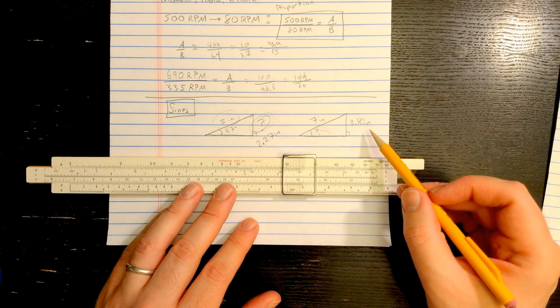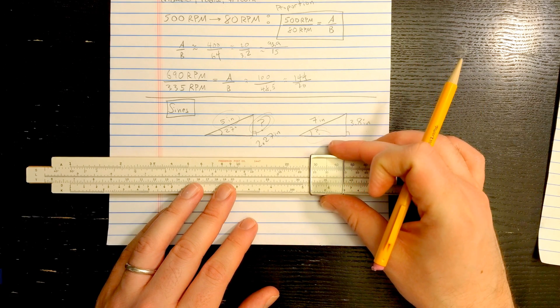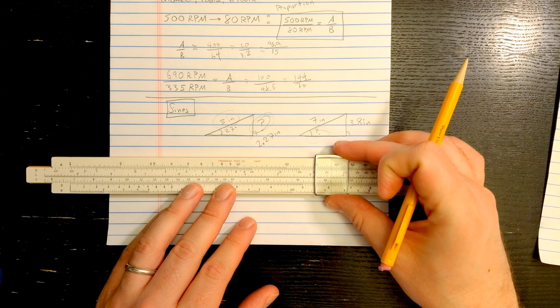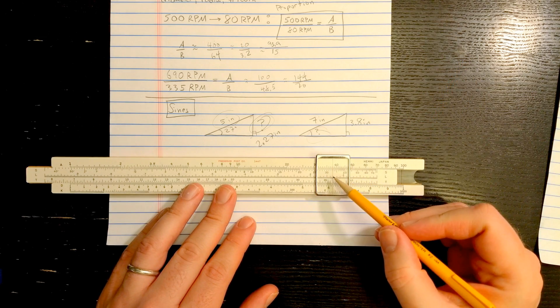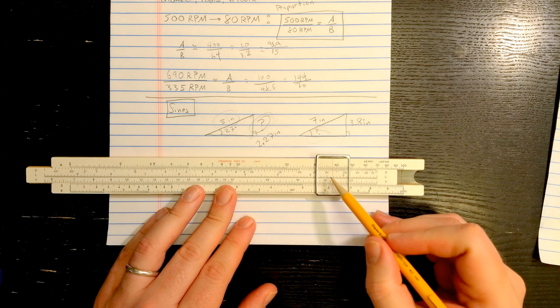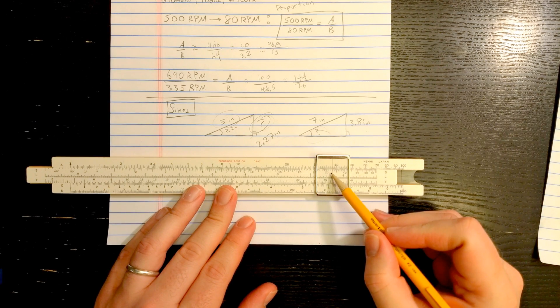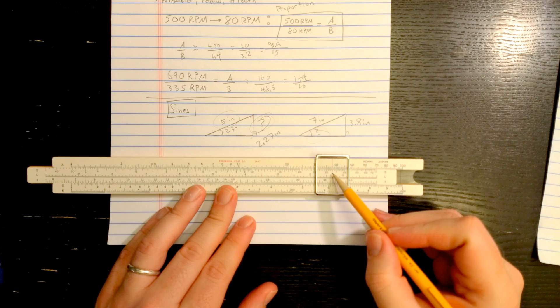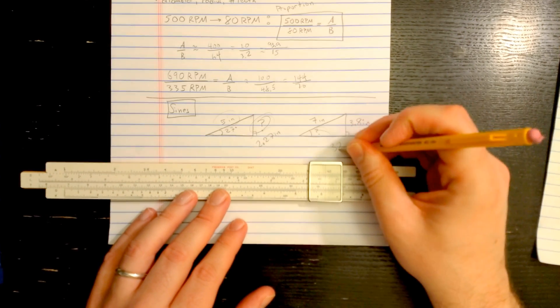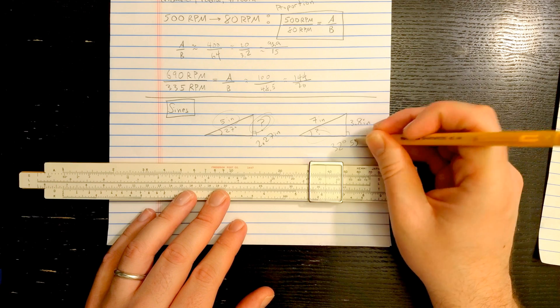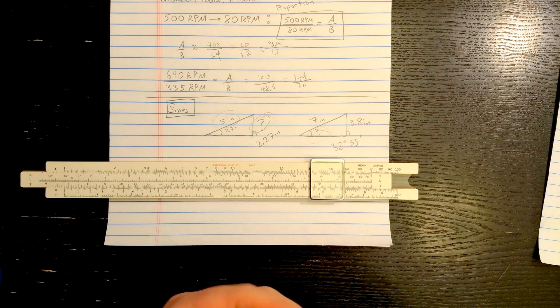Okay, so now the question is, if I come to 3.8, so here 3, 3.5, 3.6, 3.7, 3.8 on A, then I should just read angle down here on S. So it looks like 30, 31, 32, it's a little bit less than 33, let's mark it at 32 degrees, 55 minutes, approximately.